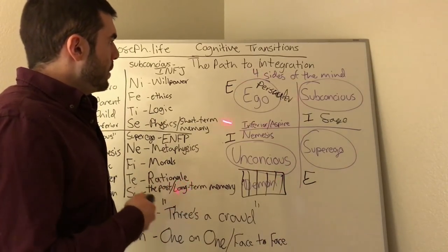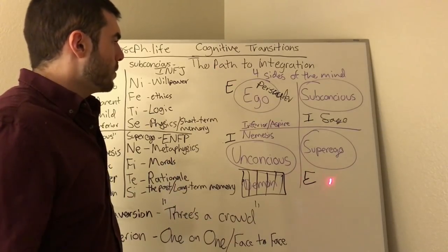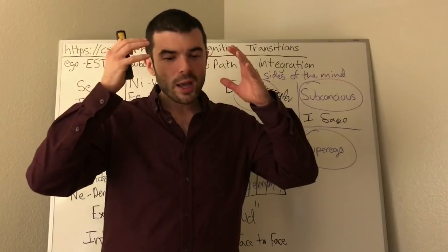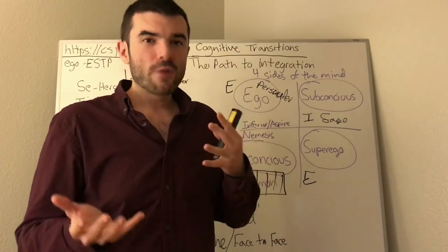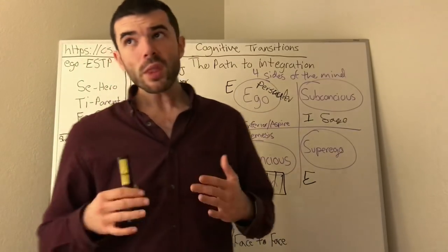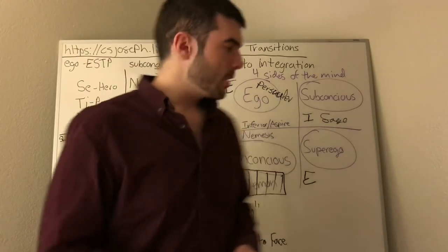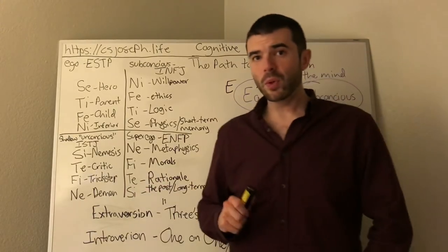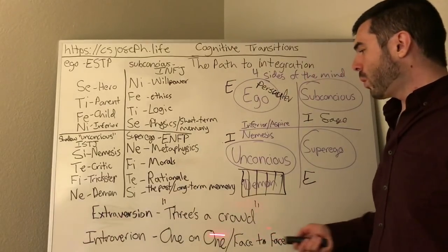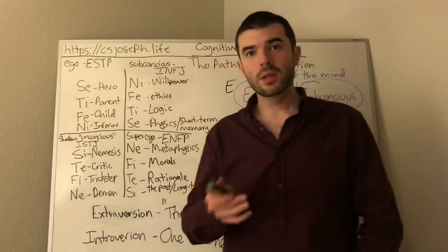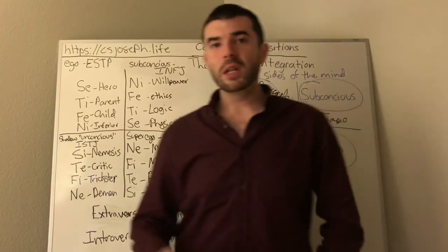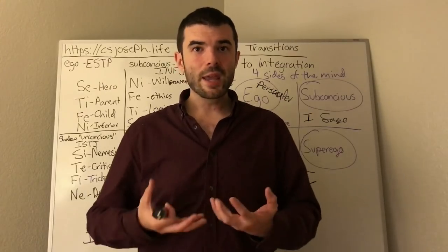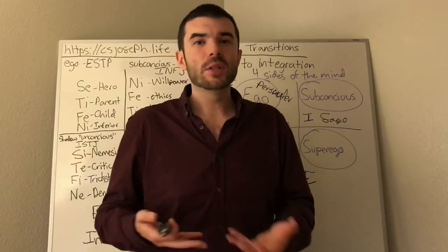Let's say the persuader, the ESTP, is in the ego. You notice that it is extroverted, and the superego is extroverted, but the subconscious and unconscious are introverted. This has to do with introversion, extroversion, and how mental energy flows between the cognitive functions and between the four sides of the mind.